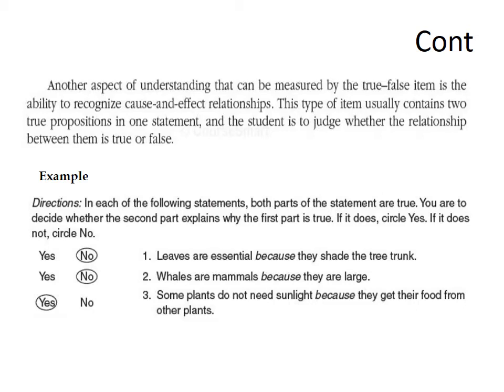Another use of the true-false item is measuring the ability to recognize cause and effect relationships. This type of item contains two true propositions in one statement, and the student judges whether the relationship between them is true or false. For example, students decide if the second part explains why the first part is true, answering yes or no. An example: 'Some plants do not need sunlight because they get their nutrients from other plants' — both parts may be true, but if the causal relationship is incorrect, the answer is no.